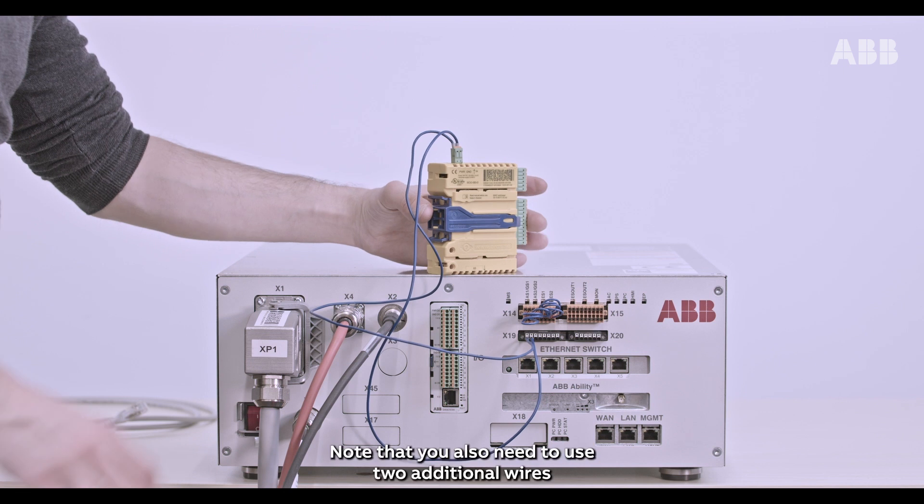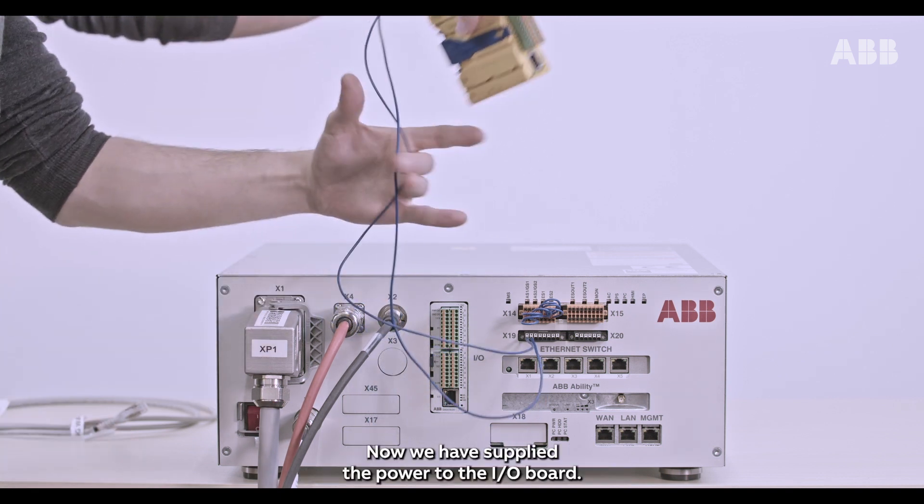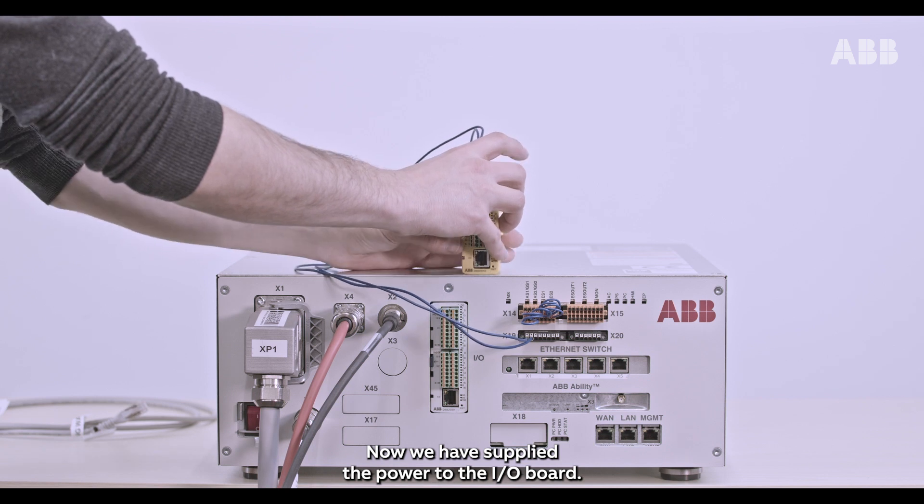Note that you also need to use two additional wires to provide 24V power to the output socket of the I.O. board. Connect the opposing ends to the X19 connector of the controller. Now, we have supplied the power to the I.O. board.